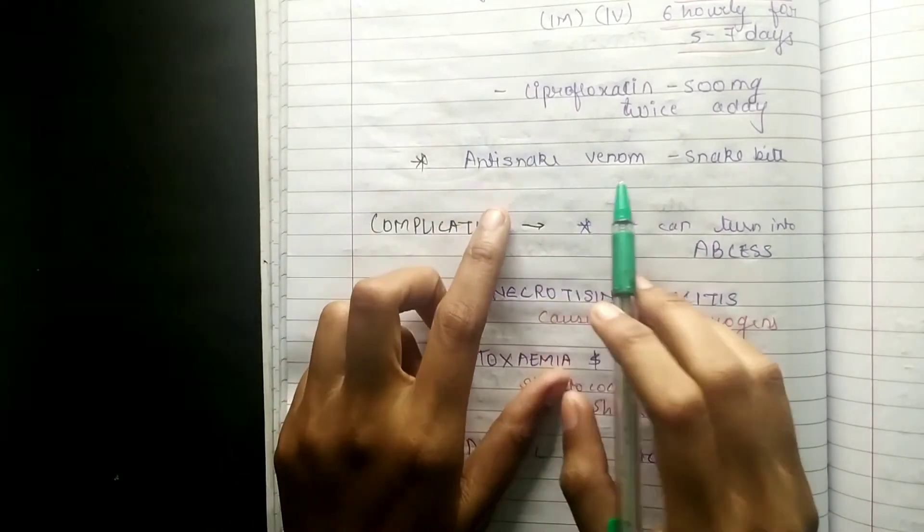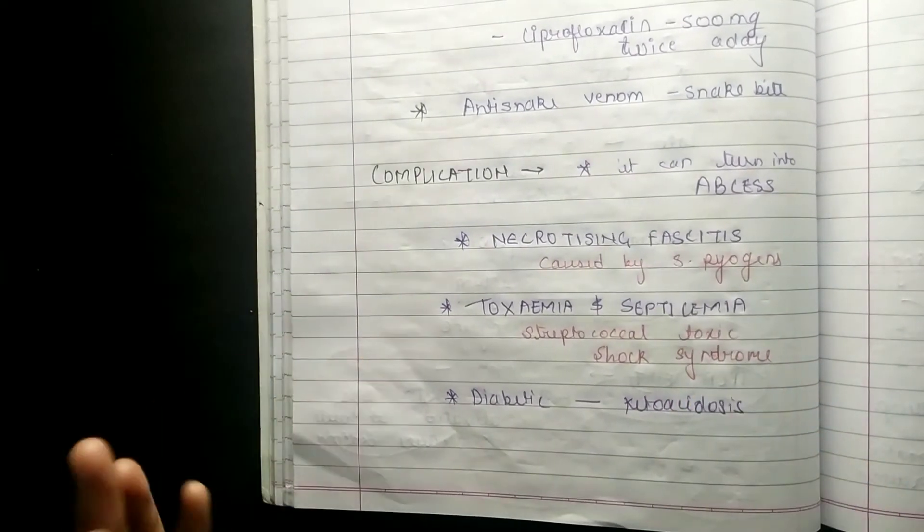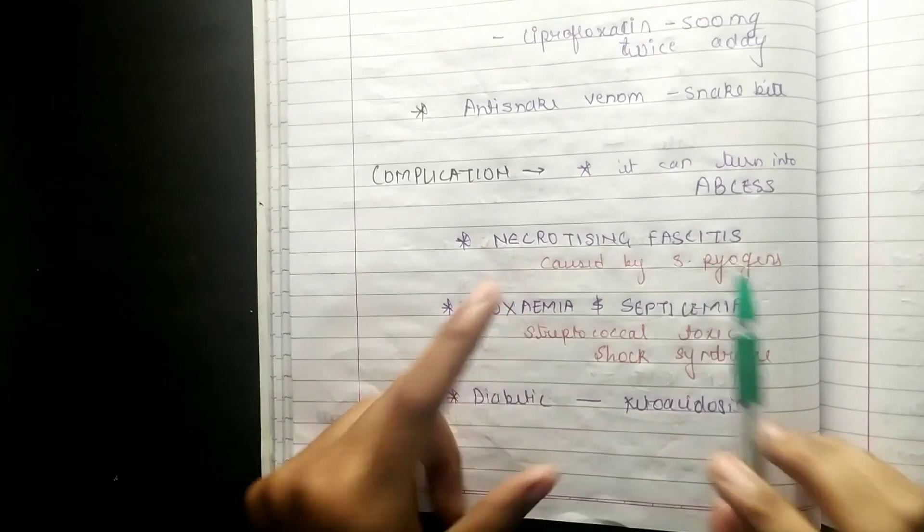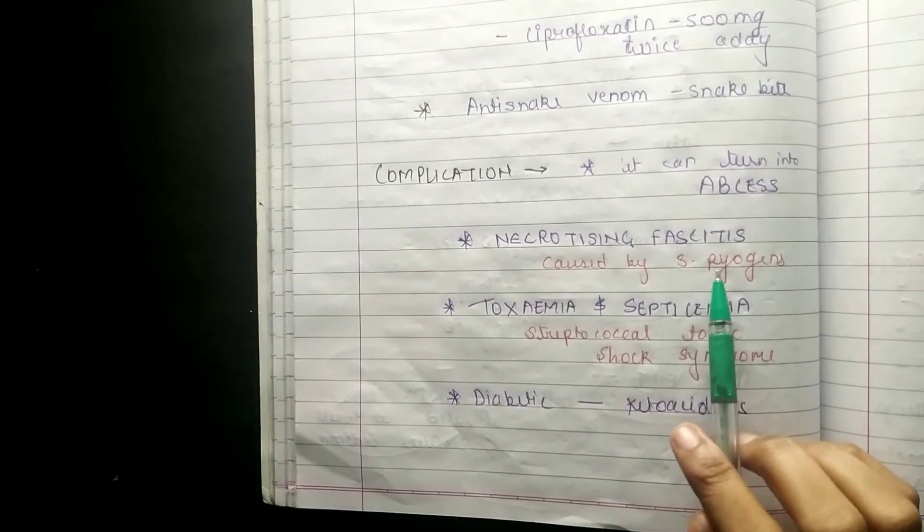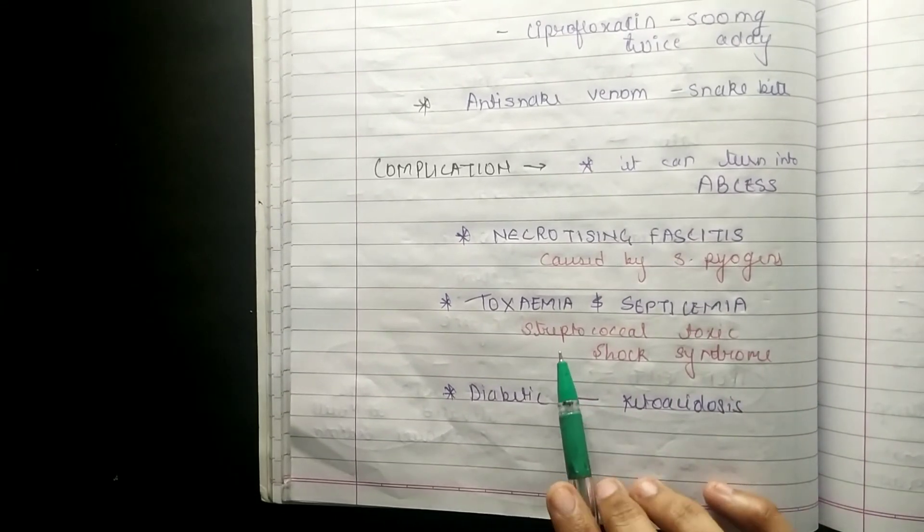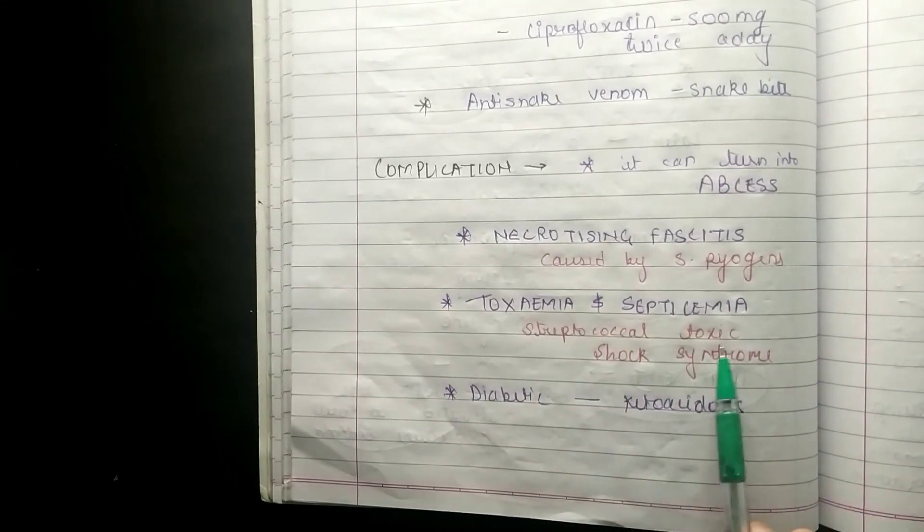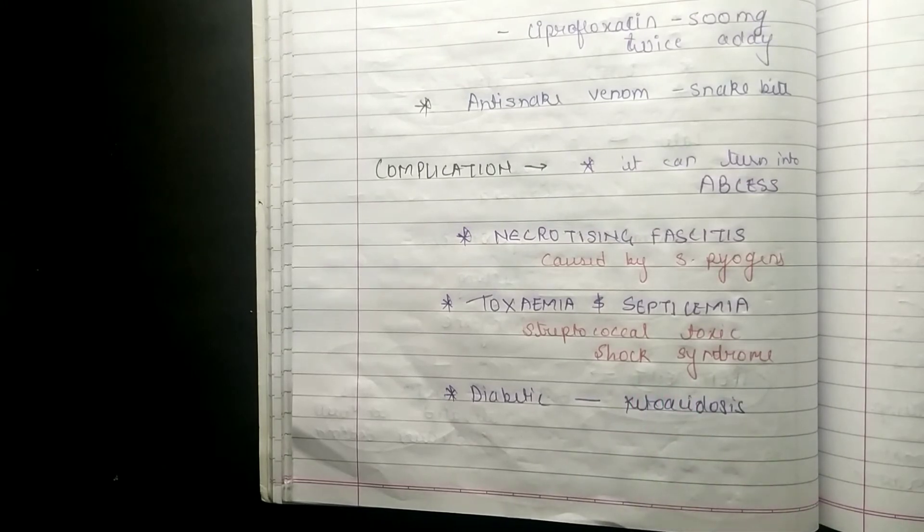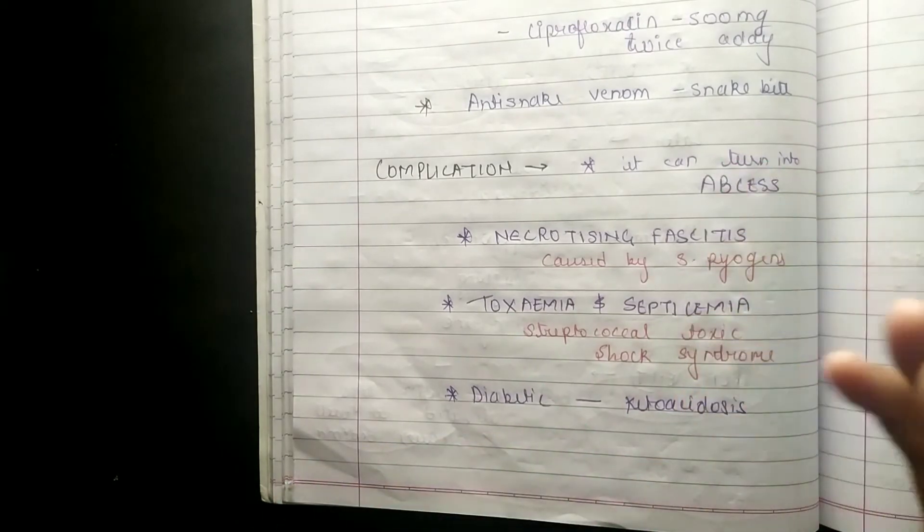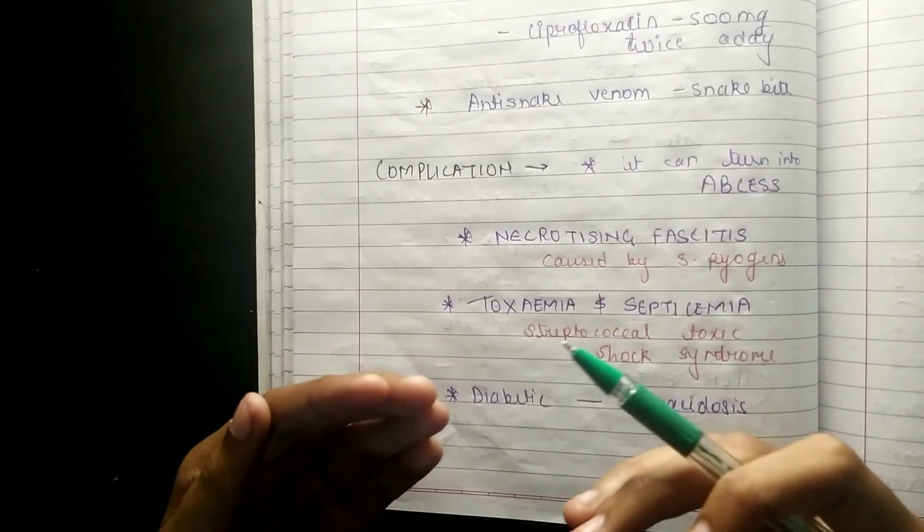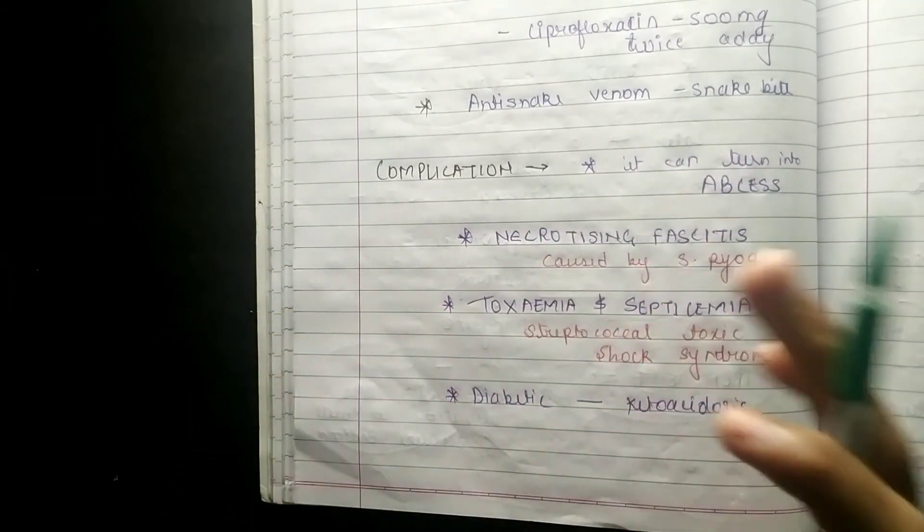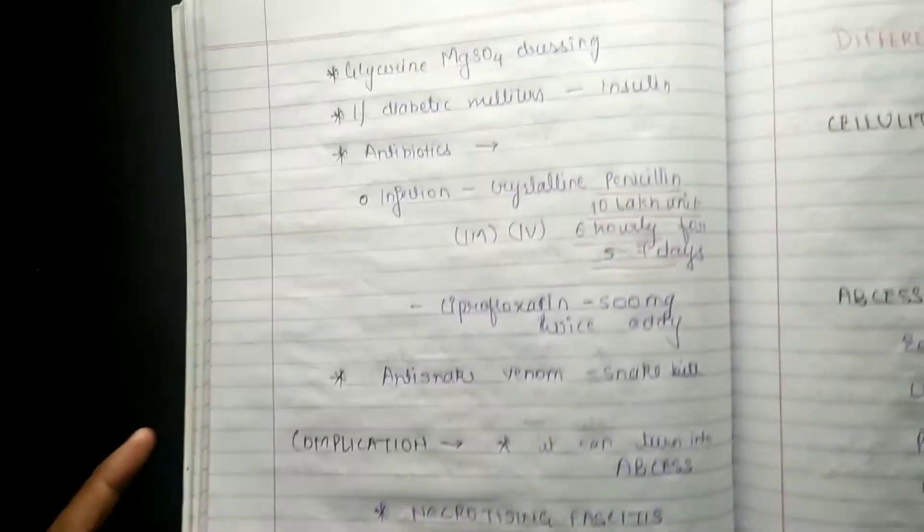Coming to complications: it can turn into abscess. Necrotizing fasciitis is also there, which is caused by streptococcus pyogenes. Toxemia and septicemia can also occur. Streptococcal toxic shock syndrome can also occur. If the patient is diabetic then ultimately the patient may get diabetic ketoacidosis, because in diabetic patients the body will start producing keto acids.